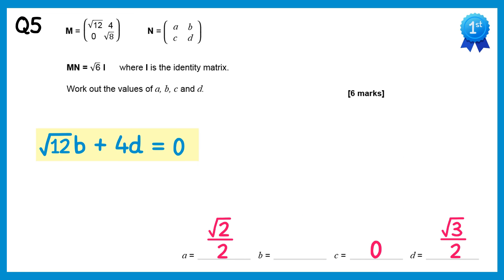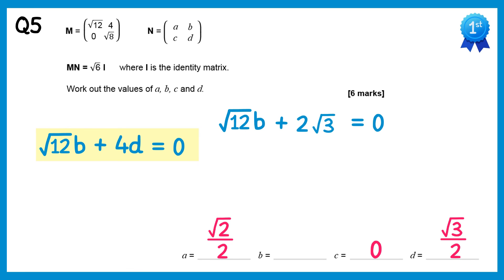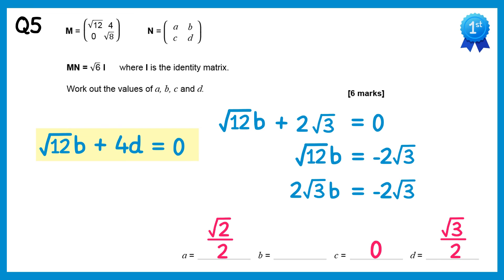Finally, looking at the second equation: root 12 times b plus 4 lots of d equals 0. Since d equals root 3 over 2, this is 4 times root 3 over 2, which simplifies to 2 root 3. Subtracting 2 root 3 from both sides gives root 12 times b equals negative 2 root 3. Recognising that root 12 equals root 4 times root 3, which is 2 root 3, the left hand side becomes 2 root 3 times b equals negative 2 root 3. Dividing both sides by 2 root 3 gives b equals negative 1.